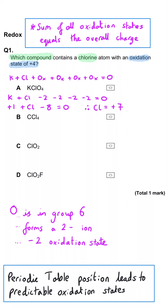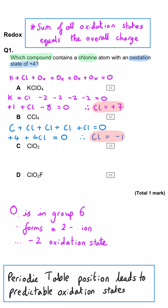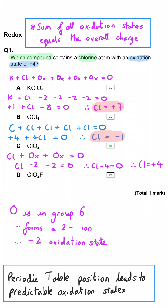In B, 4 chlorines equals 1 carbon. Carbon is in group 4, so carbon will be plus 4 and chlorine will be minus 1. In C, we've got two oxygens at minus 2 each, a total of minus 4, plus chlorine equals 0. So chlorine here is plus 4, and so C is the correct answer.